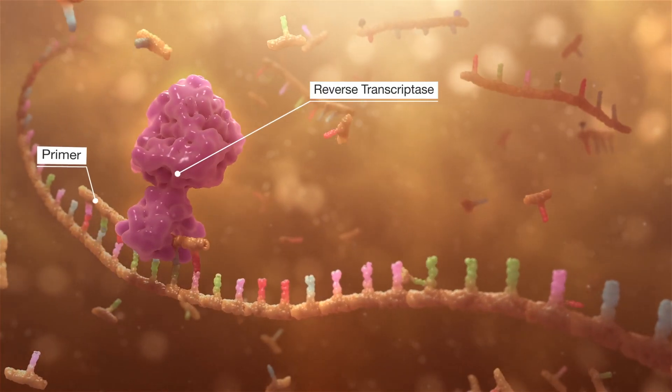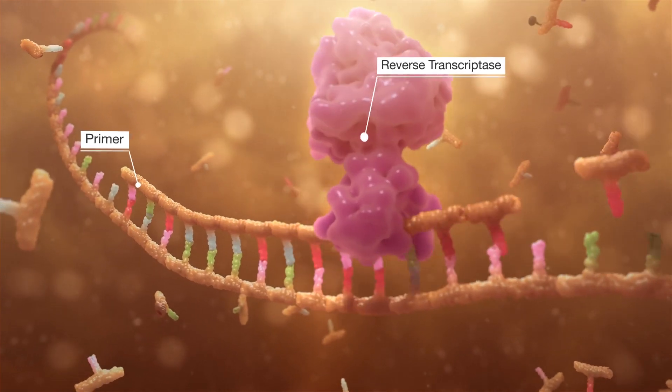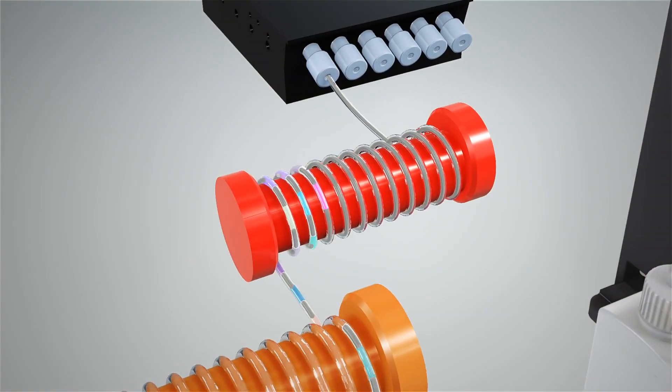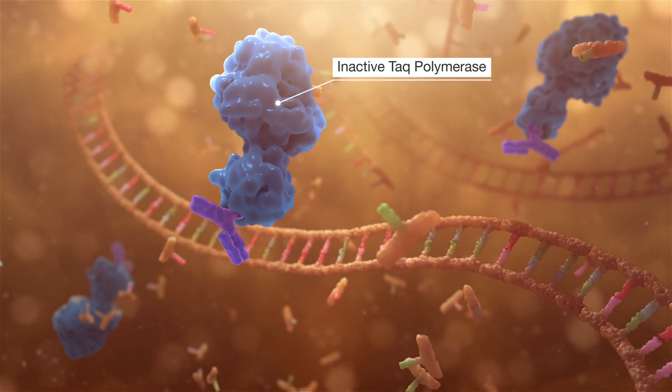The train is then delivered through a 55 degree Celsius zone for reverse transcription and then through a 94 degree Celsius zone for activation of TAC polymerase.